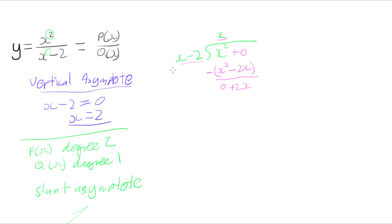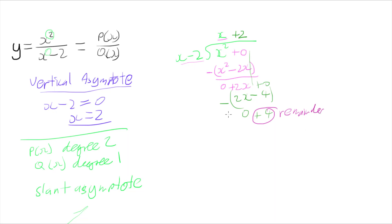Now I can divide x into 2x, because x goes into 2x two times, so we have plus 2 up here. To work out my remainder: 2 times x is 2x, and 2 times negative 2 is negative 4. Subtracting that off: 2x minus 2x is 0, and 0 minus negative 4 is plus 4. Now I can't divide x into 4, so this is my remainder. This means that x squared over x minus 2 equals x plus 2 plus the remainder 4 over x minus 2.